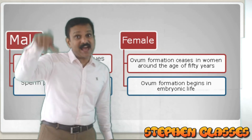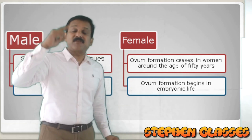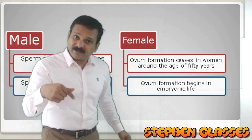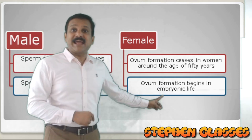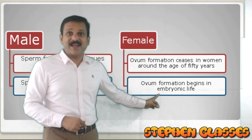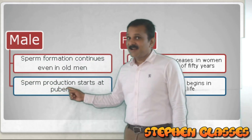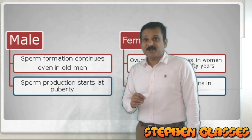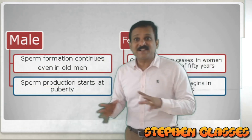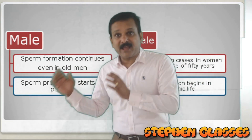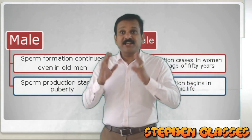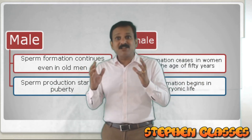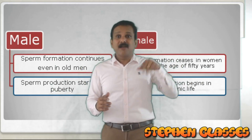Before birth itself, oogenesis will begin. So oogenesis begins in a female before birth, in embryonic life. But in the male individual, sperm production will start only when the individual attains puberty. So these are the two main differences between male and female regarding reproductive events and gametogenesis.